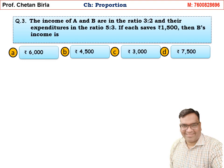Question 3: The income of A and B are in the ratio 3 is to 2. Their expenditures are in the ratio 5 is to 3. If each saves rupees 1500, then B's income is how much? The income of A and B must be in the ratio 3 is to 2.